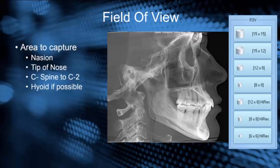The first thing we think about when scanning a patient is the field of view. We want to make sure we capture the area of interest such as nasion, tip of nose, and C-spine down to C2 or more. If we can capture the hyoid, that would also be a benefit. Depending on your machine, I would probably choose a 15 by 15 field of view, or maybe 15 by 12, on this particular scanner.